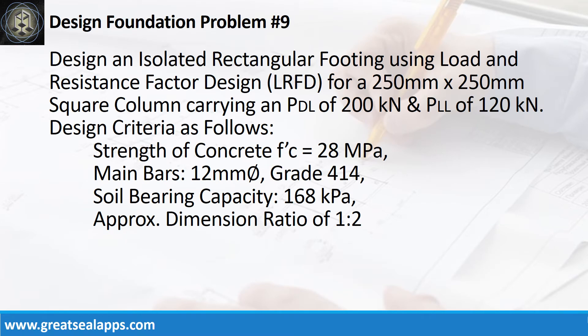Design an isolated rectangular footing using load and resistance factor design for a 250mm by 250mm square column carrying an actual dead load of 200kN and actual live load of 120kN. Design criteria as follows: strength of concrete 28 MPa, main bars 12mm bar grade 414, soil bearing capacity 168kPa, approximate dimension ratio of 1 to 2.